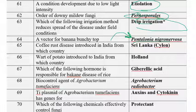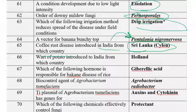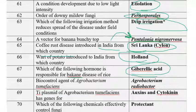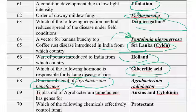Coffee rust, caused by Hemileia vastatrix, was introduced into India from Sri Lanka (Ceylon). Wart of potato was introduced into India from Holland. The hormone responsible for Bakanae disease is gibberellic acid. The biocontrol agent for Agrobacterium tumefaciens is Agrobacterium radiobacter. The Ti plasmid of Agrobacterium tumefaciens carries genes for auxins and cytokinins, which cause abnormal cell enlargement and the symptoms of tumors or galls.